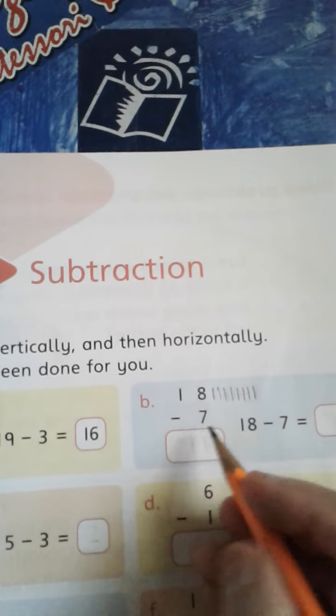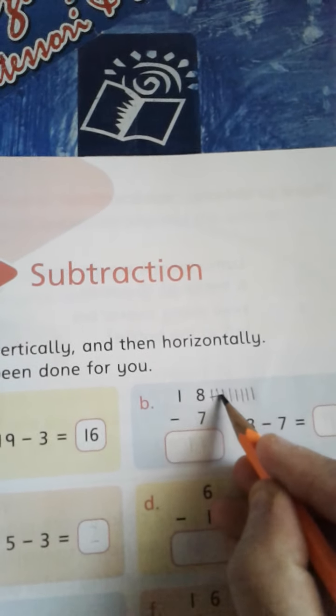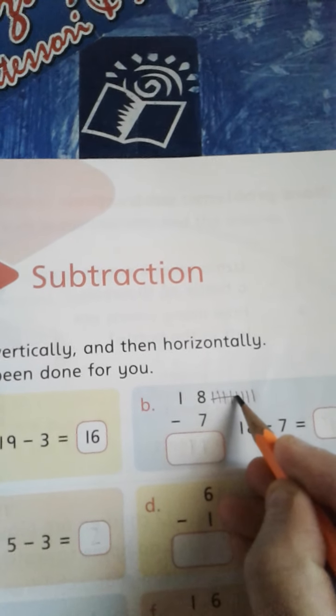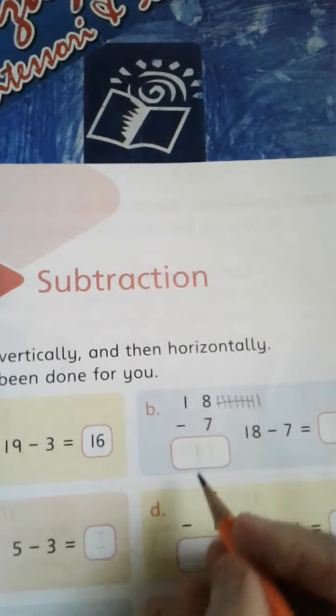Now we have to subtract 7 from 8, so 1, 2, 3, 4, 5, 6, 7. How many numbers are left? Just 1.